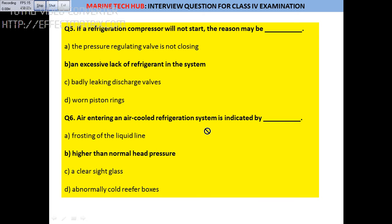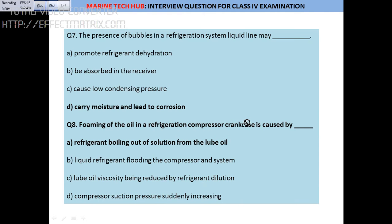Question 6: What happens if air enters a refrigerant system? Normally, whenever you are charging the system, you must first create a vacuum so that no air is present. If air is there and you charge without making a vacuum, you will get trouble and will not get a good refrigeration effect. In that case, the pressure head on the gauge will be higher than normal. The answer: whenever air is in the system, the pressure head will be more than normal.